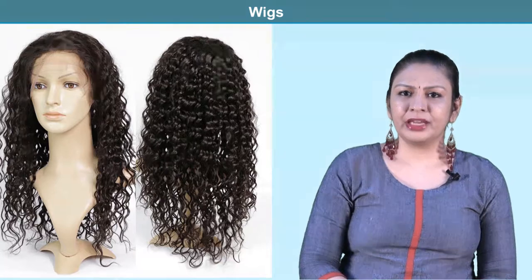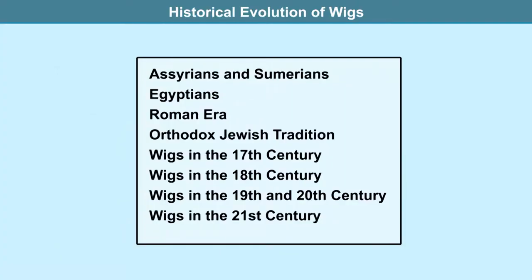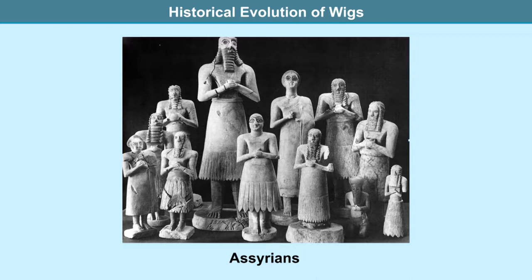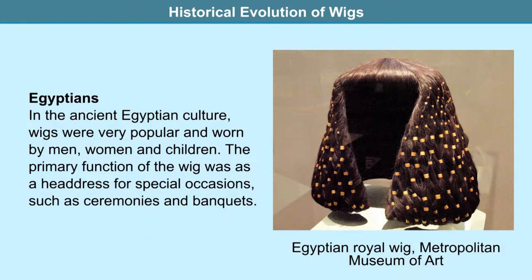In the past it was very common for both men and women of higher classes to shave their heads and wear full wigs made of human hair, or sometimes in ancient cultures even dead palm fibers. Let us look at the history and evolution of wigs on a timeline. Hair has always been an important part of human beauty. Wigs were used in ancient civilizations of the Sumerians and Assyrians. In ancient Egyptian culture, wigs were very popular and worn by men, women and sometimes even children. The primary function of a wig was as a headdress for special occasions such as ceremonies and banquets.